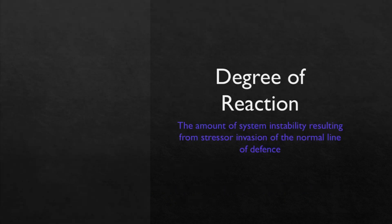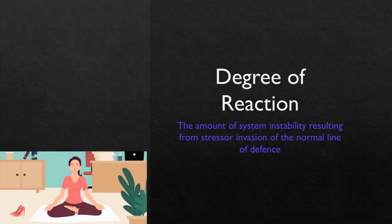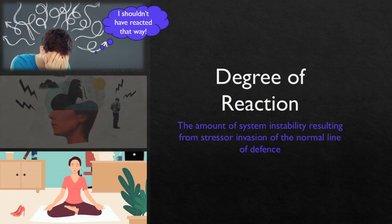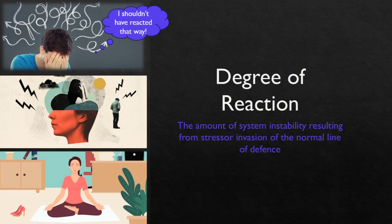Next is degree of reaction. It is the amount of system instability resulting from stressor invasion of the normal line of defense. When our lines of defense get invaded by the stressors, we give out some reactions. For example, I do yoga to keep myself calm. When my yoga routine is missed, my flexible line of defense is activated — I may snap out a little bit here and there on a few people and then later apologize to them. When my normal line of defense also gets penetrated, meaning I actually get any mental problem, I may snap out very often and behave rudely to others. That degree of snapping out at others is increasing — that is the amount of instability of my system. Thus, degree of reaction.